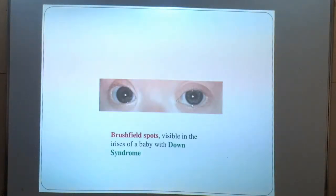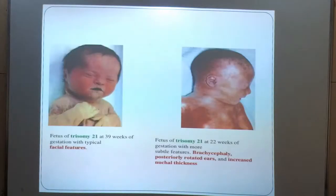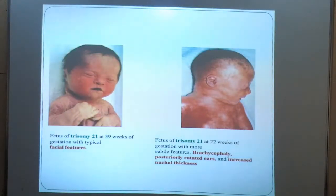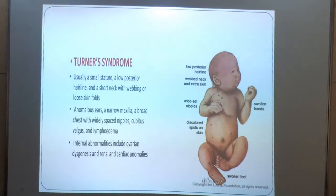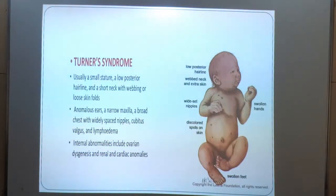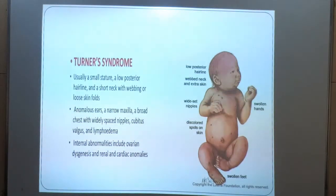These are Brushfield spots visible in the irises of a baby with Down syndrome. These are fetuses with Trisomy 21, or Down syndrome. Then Turner syndrome, which usually shows a small stature, low posterior hairline, short neck with webbing of loose skin folds, anomalous ears, and narrow maxilla. Internal abnormalities include ovarian dysgenesis and renal and cardiac anomalies.